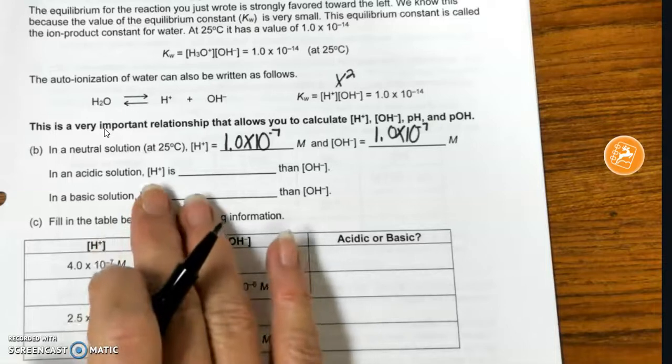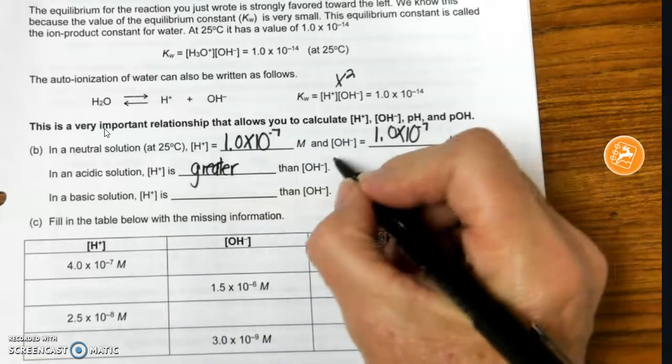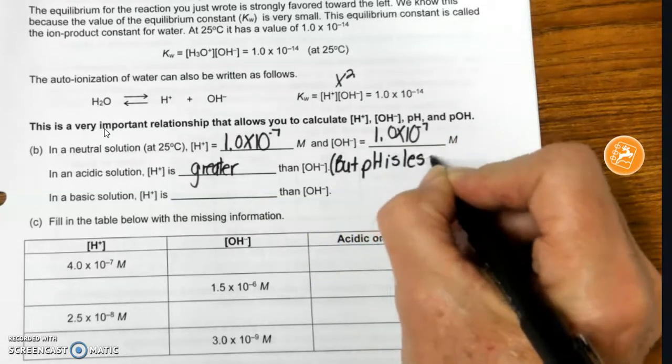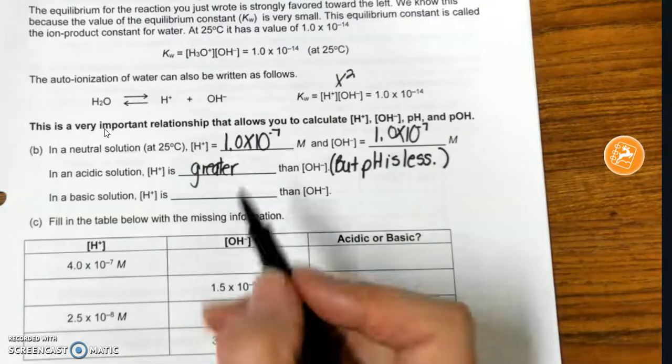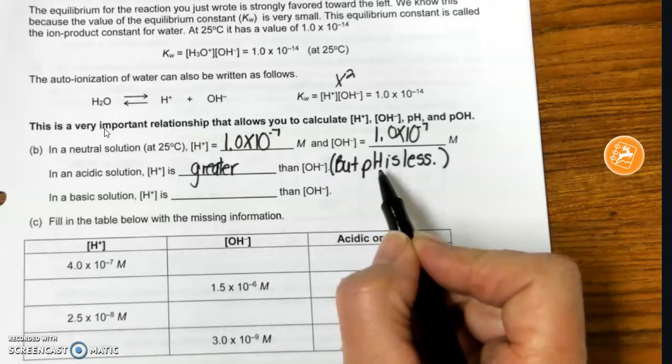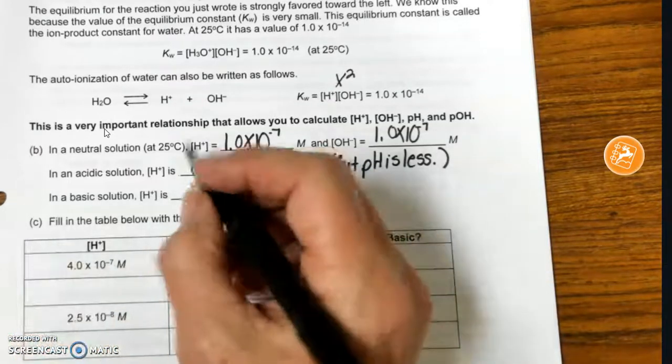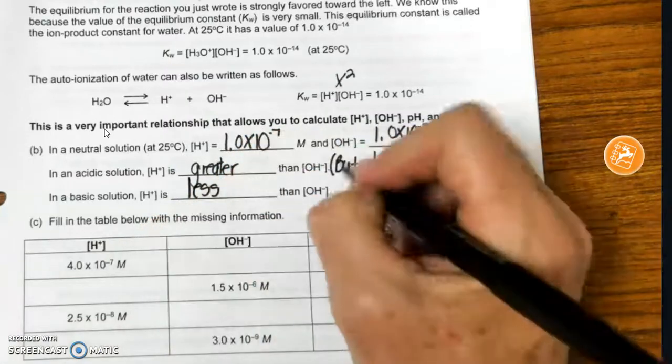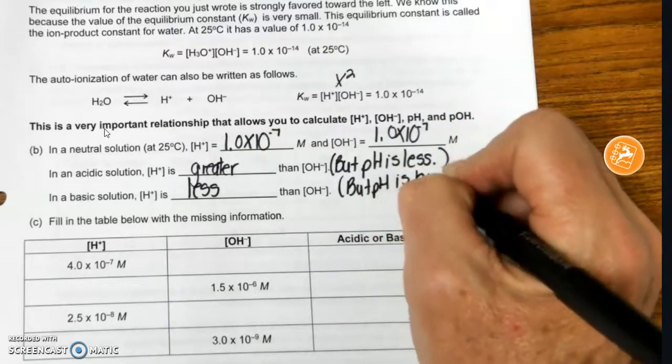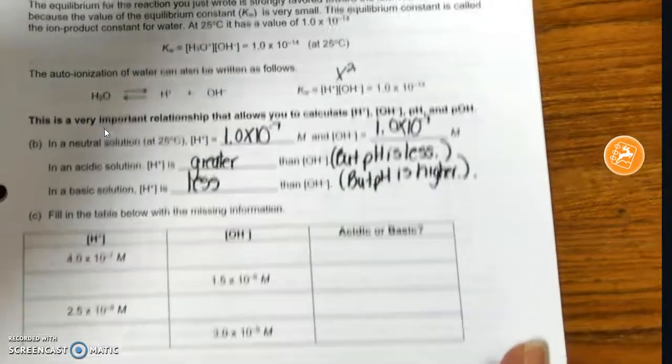Now, in an acidic solution, hydrogen ion concentration is greater than OH. And I'm going to put here, but pH is less. That's the problem. Hydrogen ion, lots of hydrogen ions make a very low pH because pH is log scale. It is not a normal scale. In a basic solution, hydrogen ion is less than OH, but pH is higher. So that's going to be the problem. You'll just have to kind of work that out.